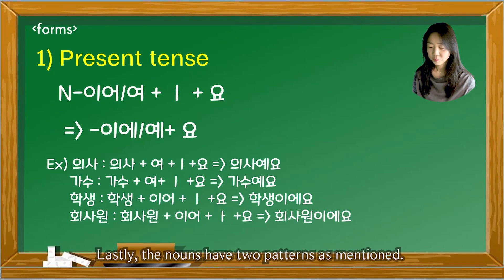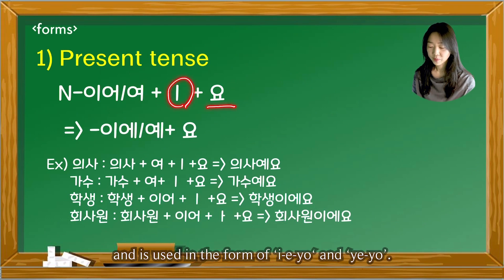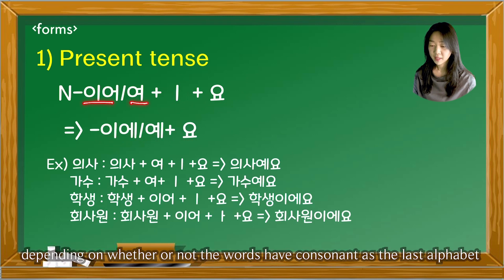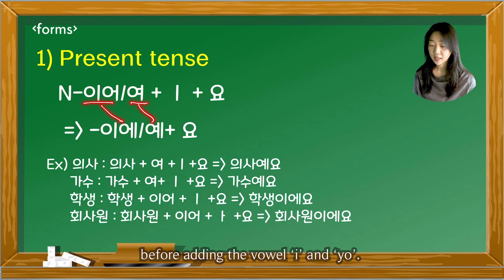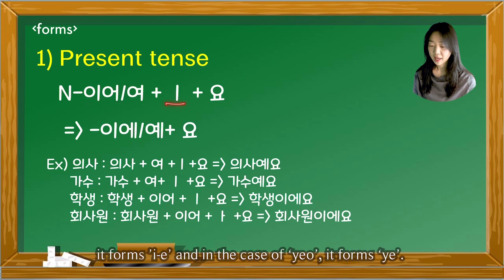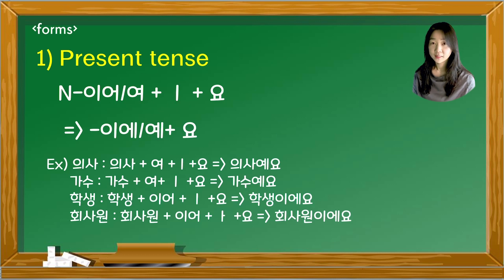Lastly, nouns have two patterns. The vowel 이에 is inserted right in front of the final 요, used as 이에요 or 예요, depending on whether the word ends in a consonant or vowel. So words like 의사 and 가수 become 의사예요 and 가수예요, while 학생 and 회사원 become 학생이에요 and 회사원이에요.